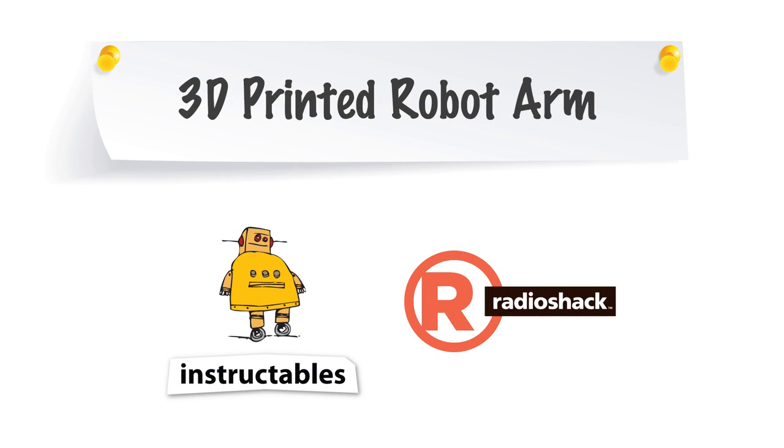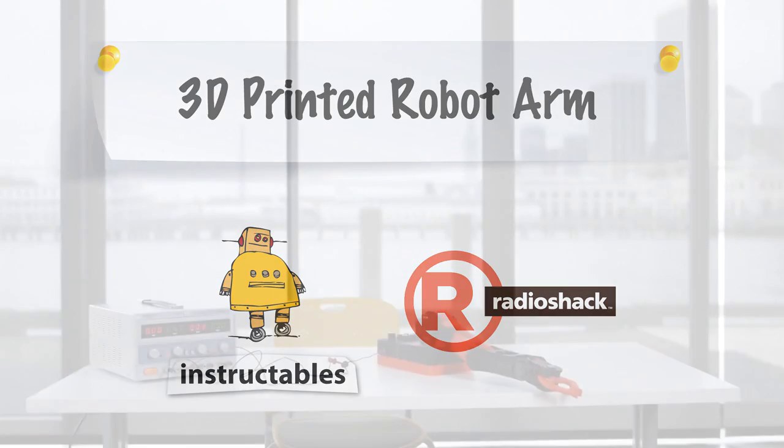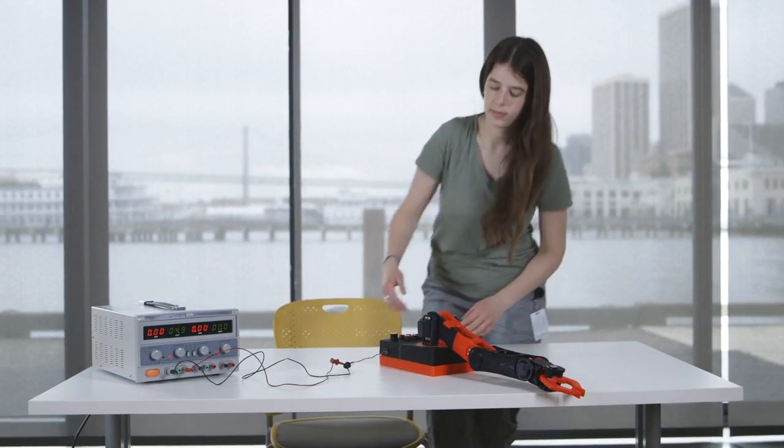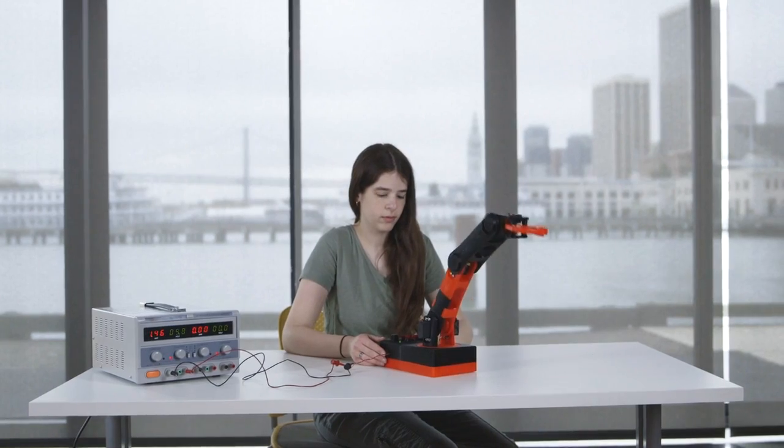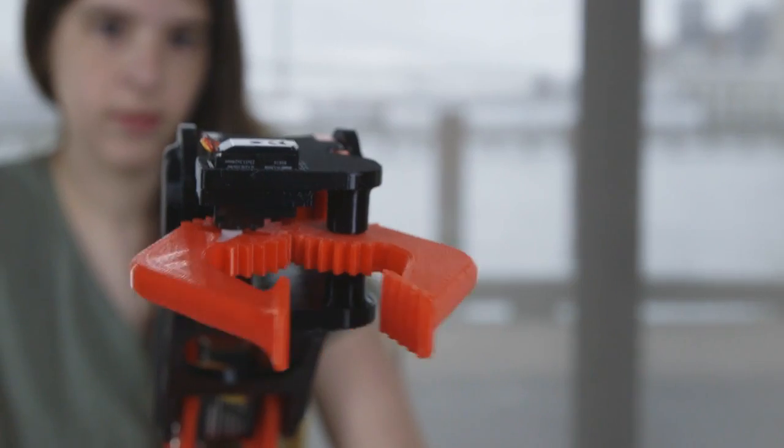This is Blurred Instructables, and today I'm going to show you how to make a 3D printed robot arm. This project is a robot arm that you can control using an Arduino, with all the parts 3D printed and easily snapped together. I made this project because I love robotics and really wanted to have a robot arm of my own.